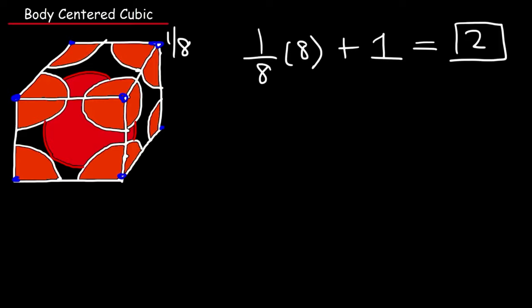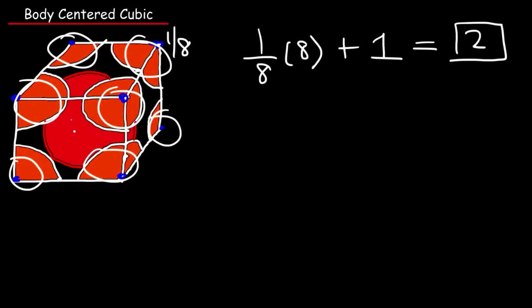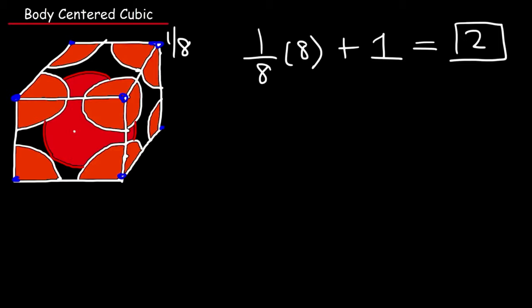The coordination number is 8. The atom in the middle is attached to 8 other atoms, which are basically the 8 corners — 1, 2, 3, 4, 5, 6, 7, and the other one that's implied but not visible in the drawing. So the coordination number is 8.